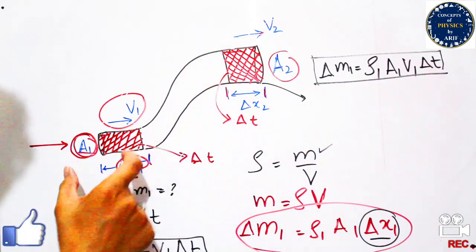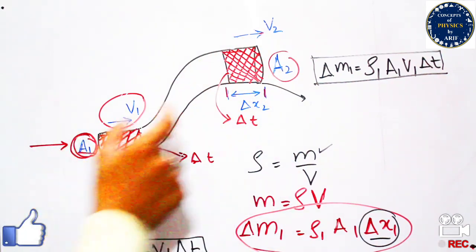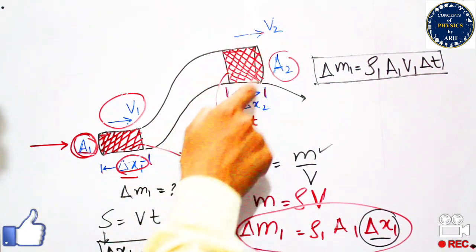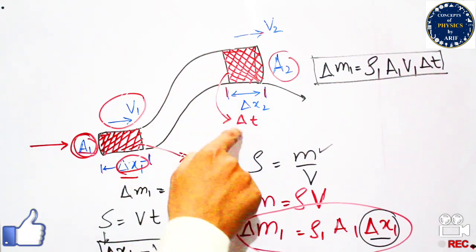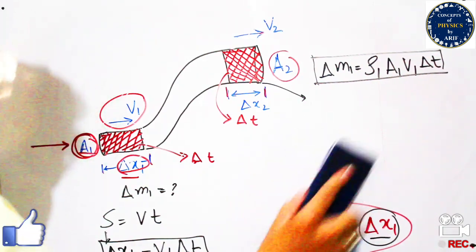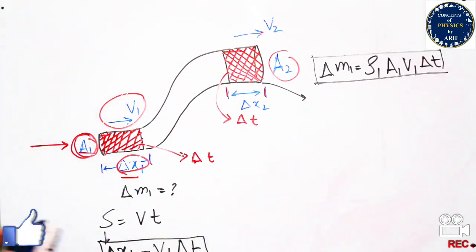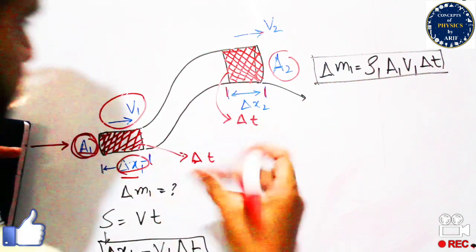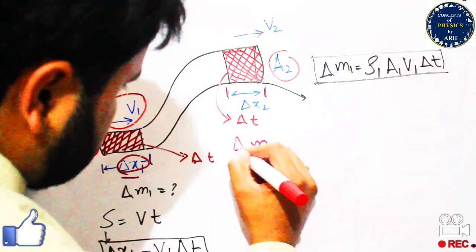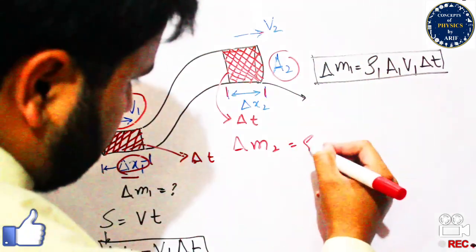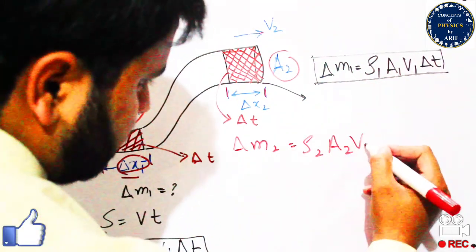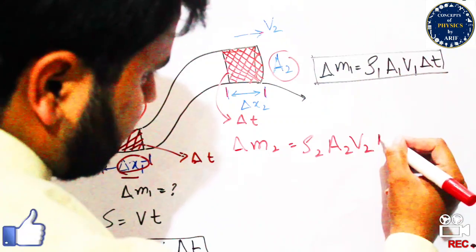Similarly, we can find the value of delta m2 from the second region, which has the same geometry of area, velocity, and a small distance covered for the same small time interval delta t. So delta m2 equals rho2 times A2 times v2 times delta t.